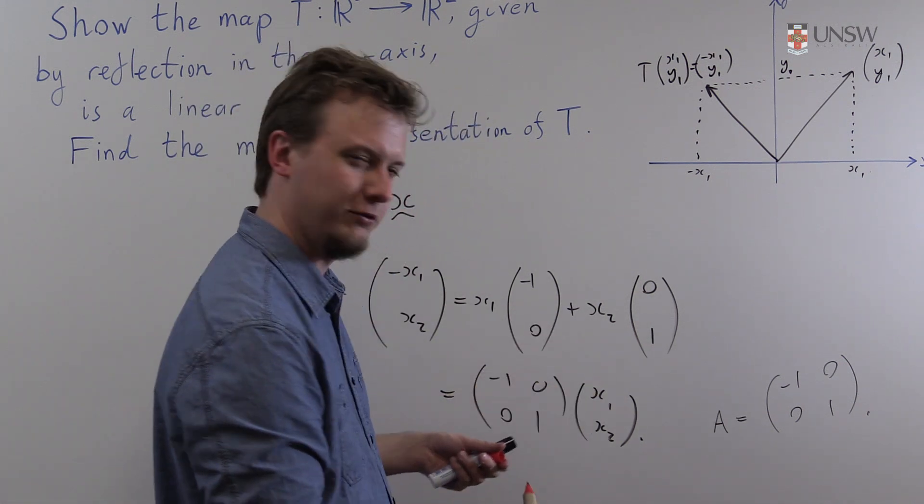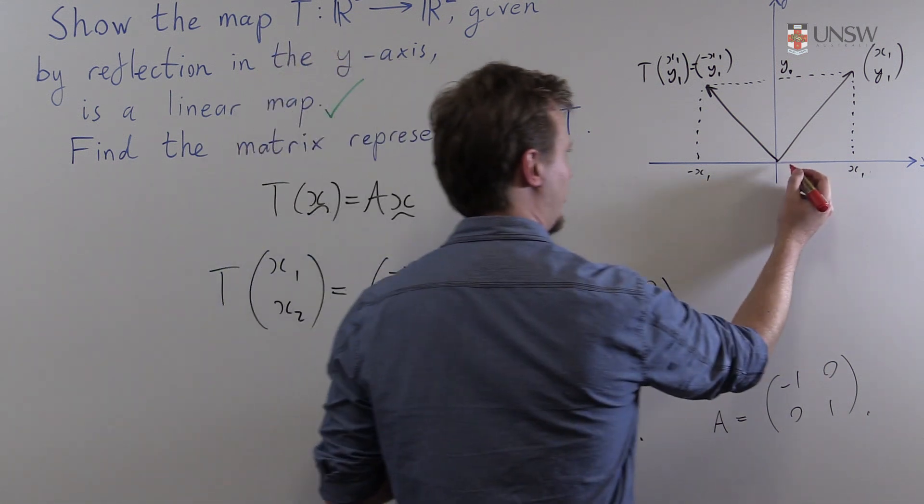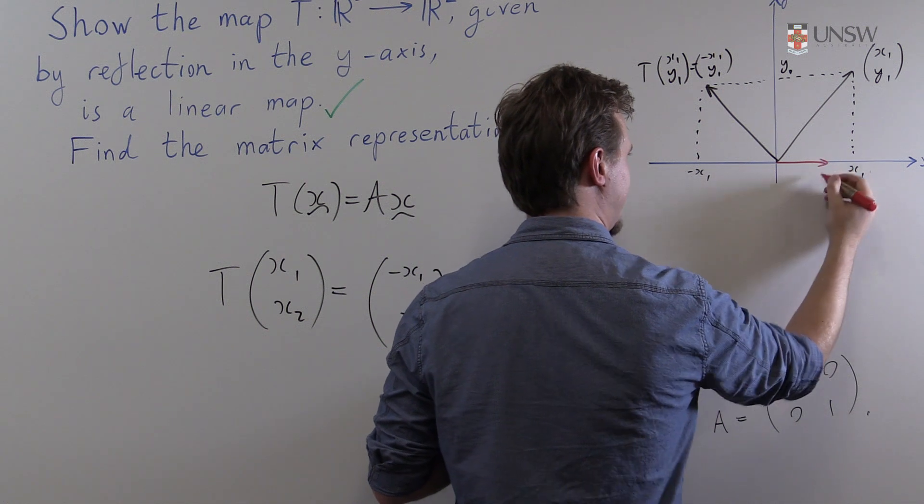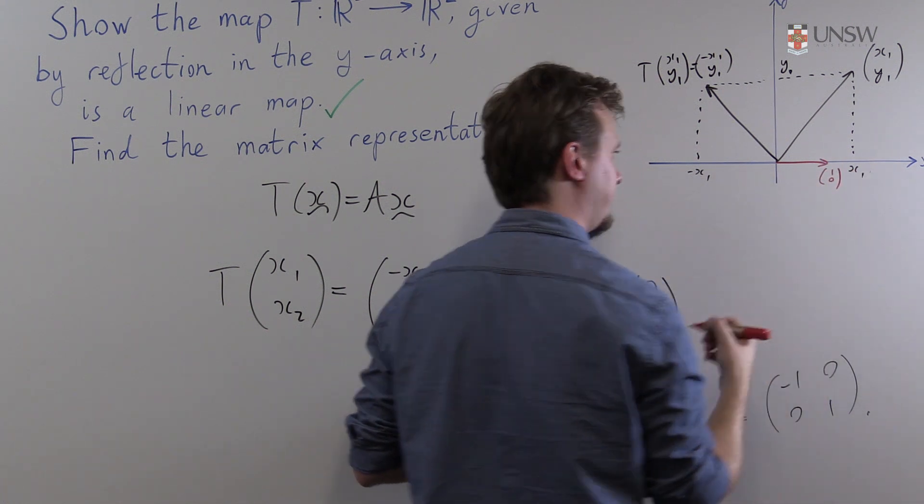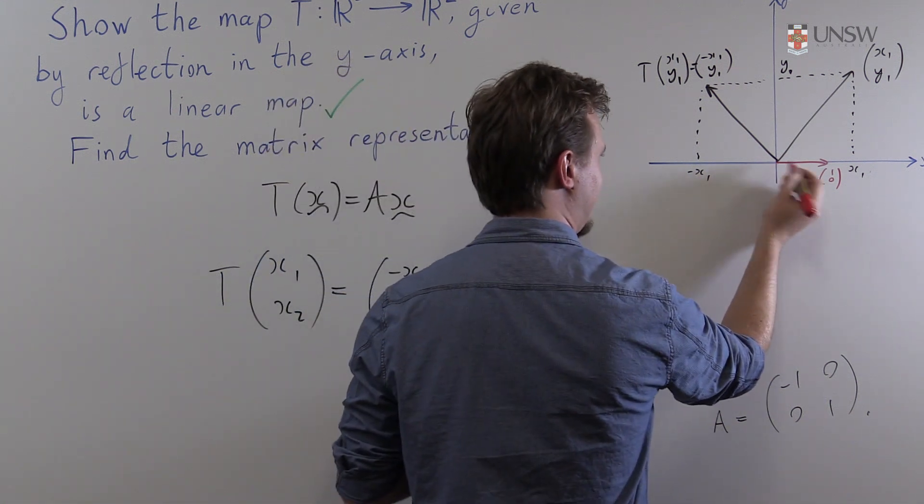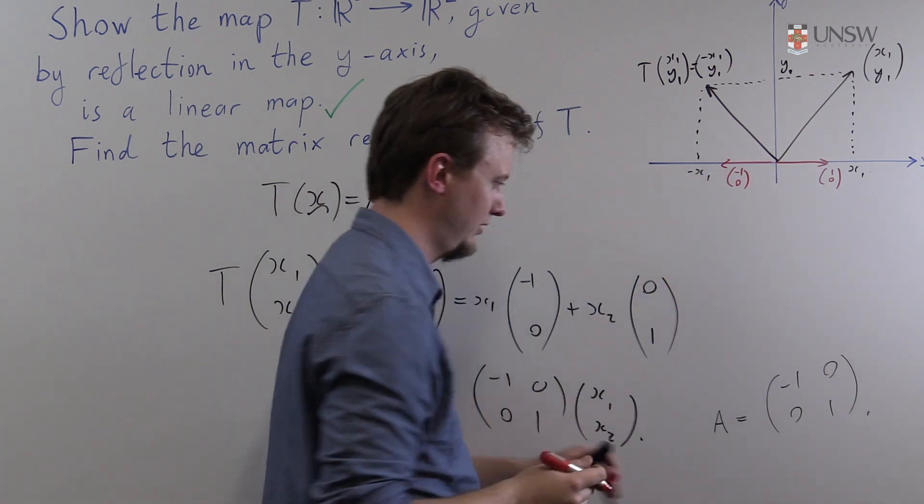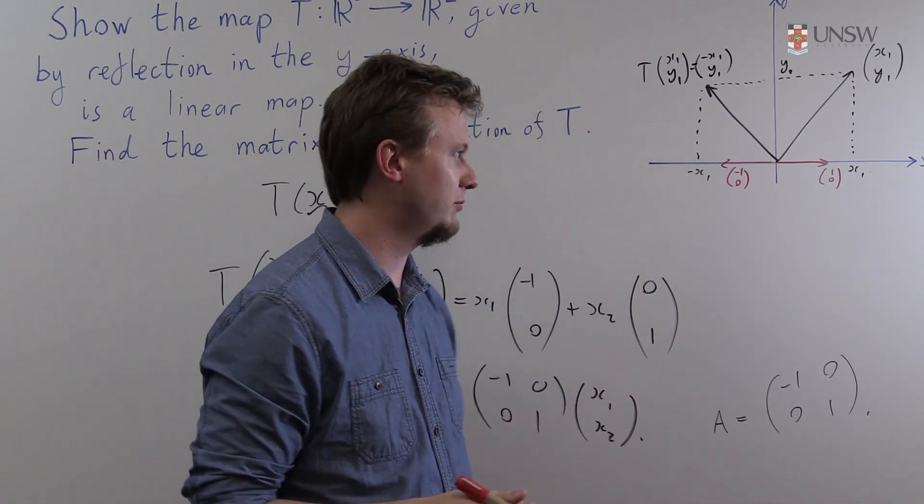So to find the first column of the matrix A using the matrix representation theorem we need to know the image of the vector (1, 0), the first standard basis vector. And well it should be quite obvious that under this reflection this becomes the vector (-1, 0) which is yes the first column of A.